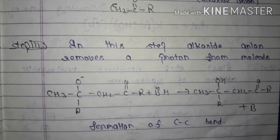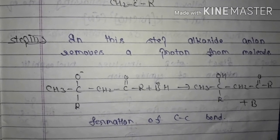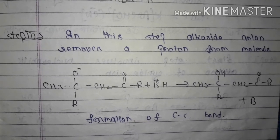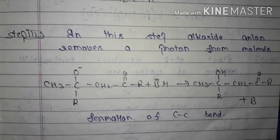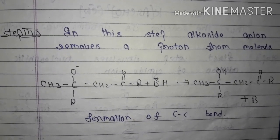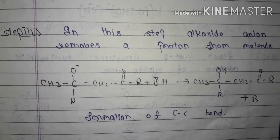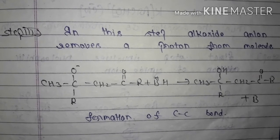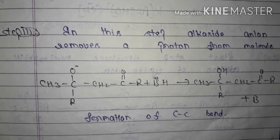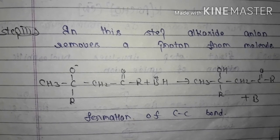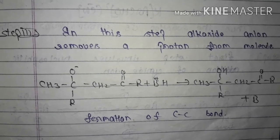Step three: in this step the alkoxide anion removes a proton from the molecule. From what was formed in the second step, a proton is removed and a carbon-carbon double bond forms in this reaction. And here the aldol reaction ends.